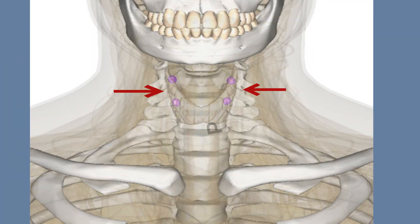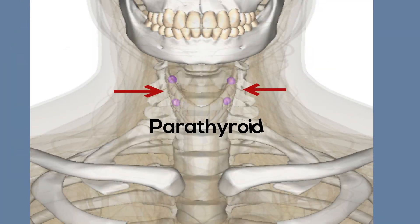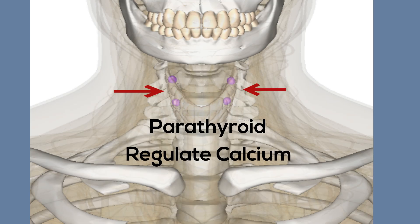Next is the parathyroid. They are 4 small glands located near your thyroid and they are each about the size of a grain of rice. They have the important job of regulating the calcium levels of your body.